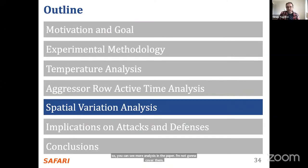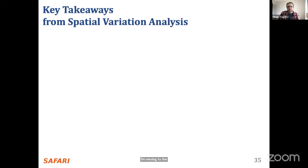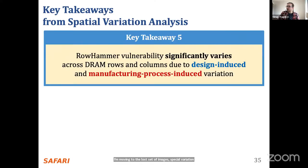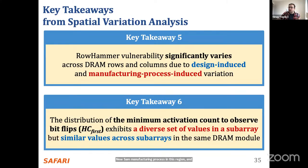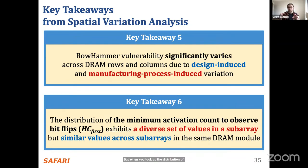Now let's move to the last set of analysis: spatial variation. We make two takeaways. First, row hammer vulnerability significantly varies across DRAM rows and columns due to the cell design and manufacturing process variation. Second, we look at how vulnerability varies across subarrays in a DRAM bank. The distribution of HC_first values exhibits a diverse set of values within a subarray, but when you compare the distribution from one subarray to another within the same chip, you see similar distributions.